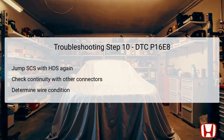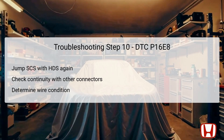In step ten, perform a jump on the SCS line again using the HDS, waiting more than one minute before proceeding. Check the continuity between the shutter grille terminal and the body ground while methodically disconnecting other connectors such as the PCM and the battery sensor. This is necessary to isolate which component, when disconnected, impacts the continuity reading. If you find that continuity is lost when a particular connector is removed, it indicates that the wiring to that specific part is functioning correctly. Otherwise, if continuity remains unaffected, the investigation should extend to repairing any shorts within the LIN battery sensor wire.